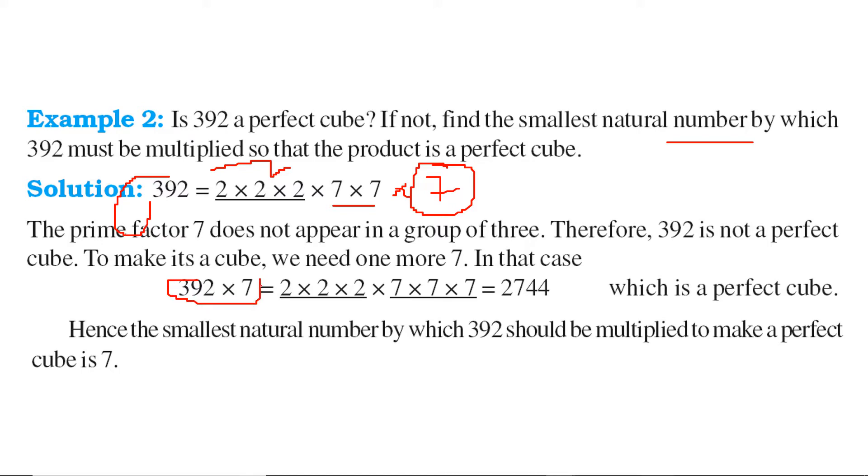So just multiply 392 by 7, which gives 2744. This will give you 2 cubed into 7 cubed, that is 2 into 7 whole cubed, that is 14 cubed. So now 2744 is the cube of 14.